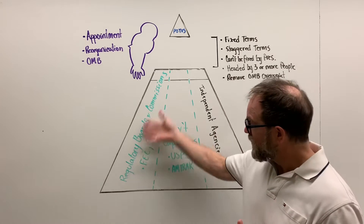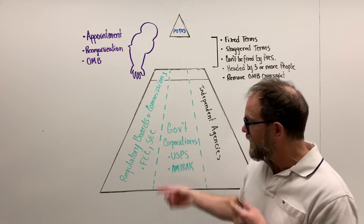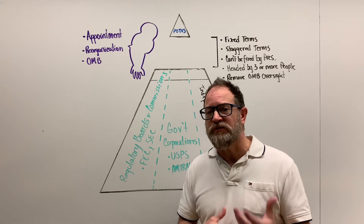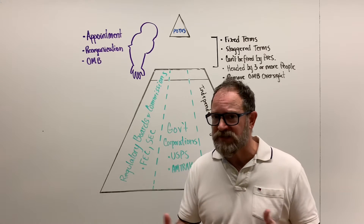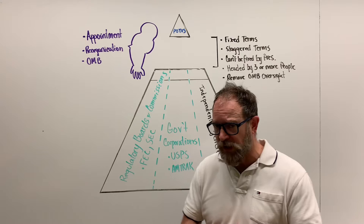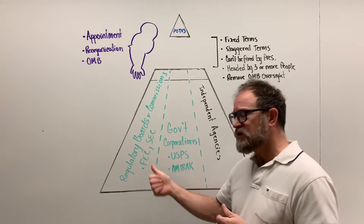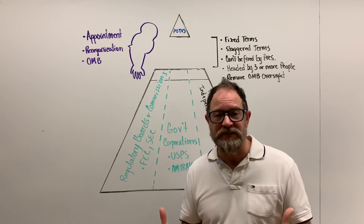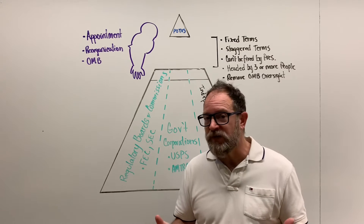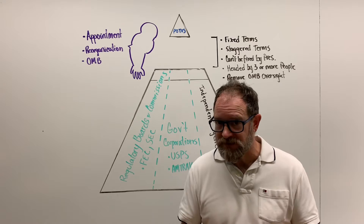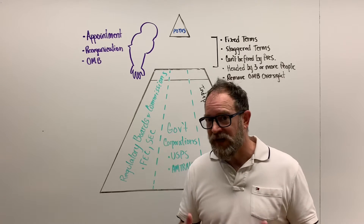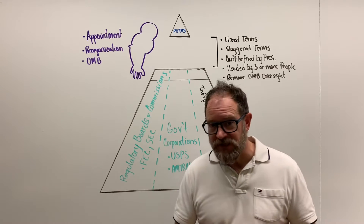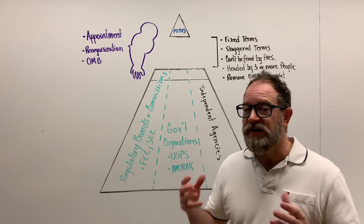Some examples of regulatory boards and commissions: the SEC - Securities and Exchange Commission - which creates the rules by which we buy and sell stocks and bonds. We also have the Federal Elections Commission, which regulates governmental practices such as how we finance our campaigns. If you violate campaign finance law, you're going to get in trouble with the FEC.